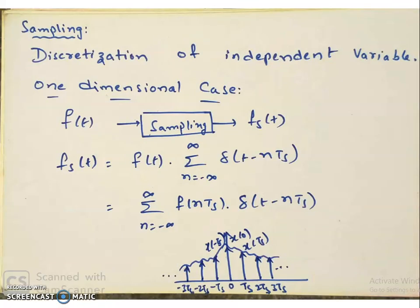Moving on to image sampling. Sampling is nothing but discretization of the independent variable of the signal. Let us say F of t is the signal we are looking at. When we sample the signal we will get Fs of t. Sampling the signal is nothing but multiplying the signal with the impulse train.